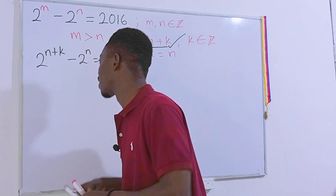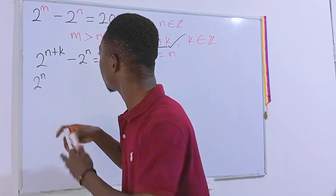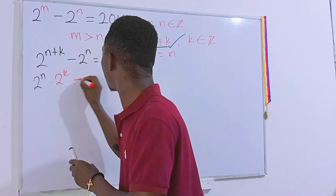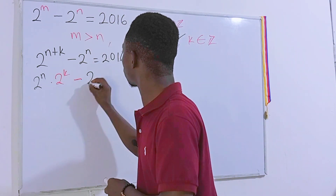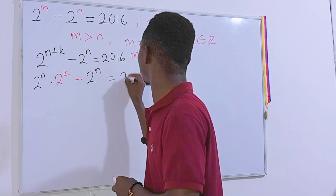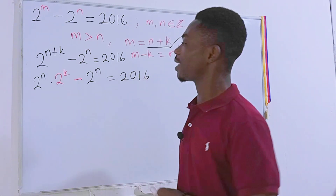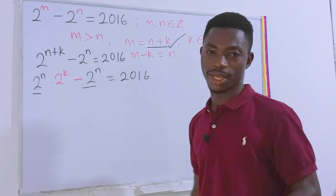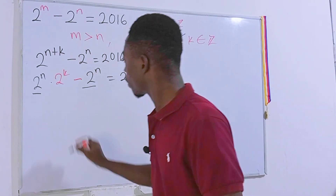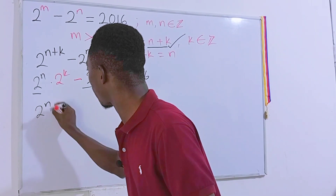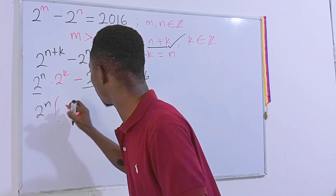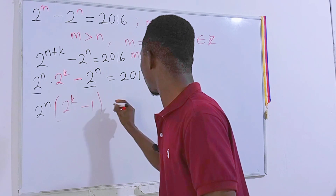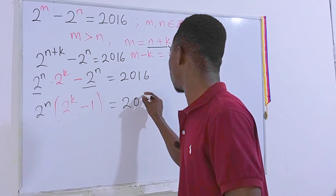We can rewrite 2 to the power (n plus k) as 2 to the power n times 2 to the power k. So the expression becomes 2 to the power n times 2 to the power k, minus 2 to the power n, equals 2016. Since 2 to the power n is common, we factor it out: 2 to the power n times (2 to the power k minus 1) equals 2016.